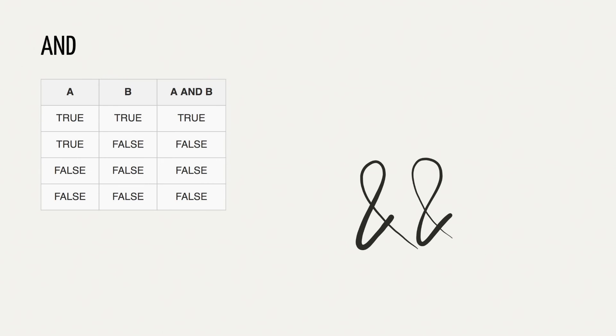The symbol for and is double ampersand. And this is the so-called truth table for and. It's like a cheat sheet. So, only true and true give true. And all other combinations include false, so they result in false.